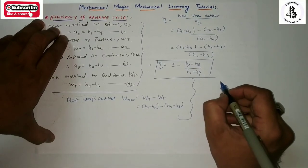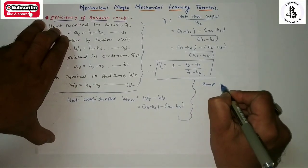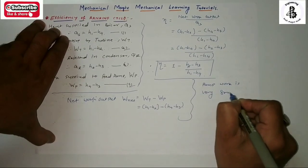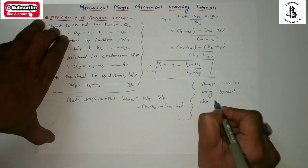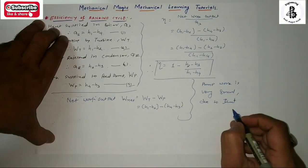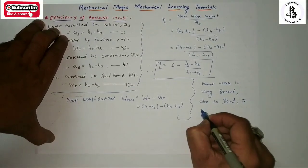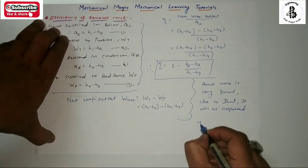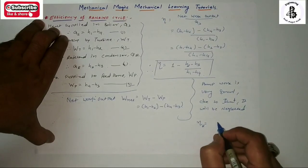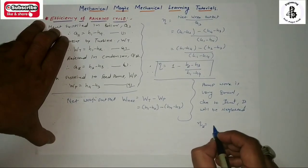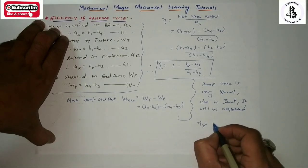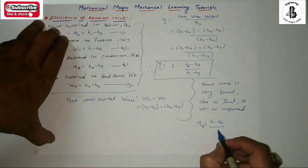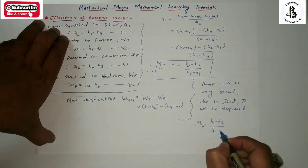Sometimes the pump work is very small and can be neglected. So the simplified efficiency of the Rankine cycle becomes: efficiency = (H1 − H2) / (H1 − H4).